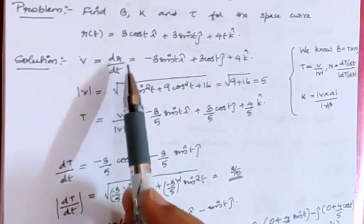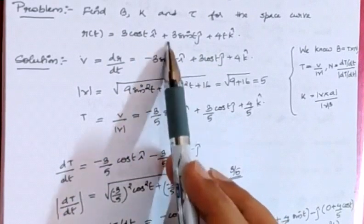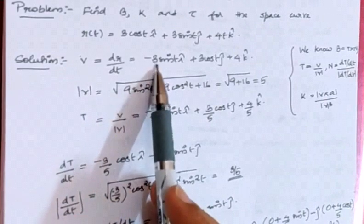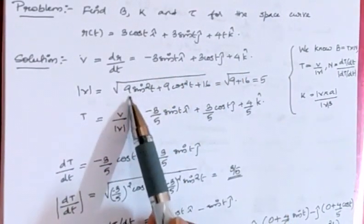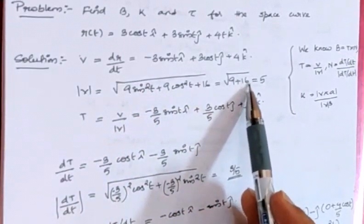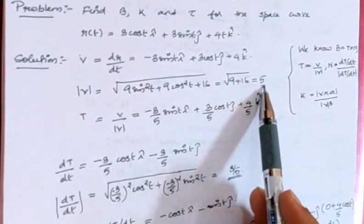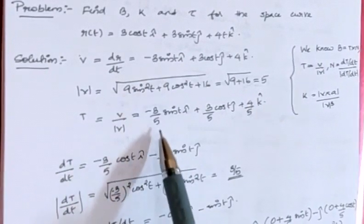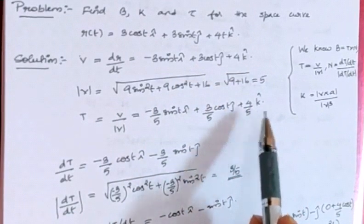First we find the velocity, defined as dr/dt. If r is as given, the derivative is v = -3sin(t)i + 3cos(t)j + 4k. The magnitude |v| = √(9sin²t + 9cos²t + 16) = √(9 + 16) = √25 = 5, since sin²t + cos²t = 1. Therefore T = v/|v| = (-3/5)sin(t)i + (3/5)cos(t)j + (4/5)k.